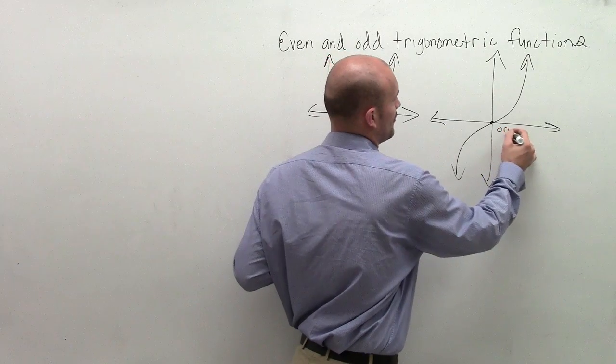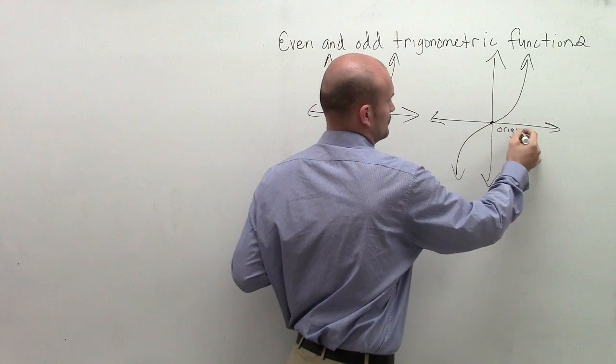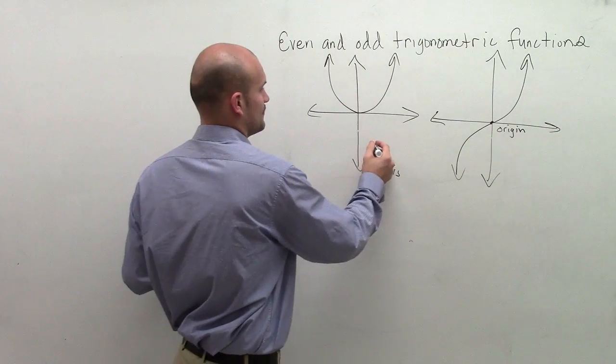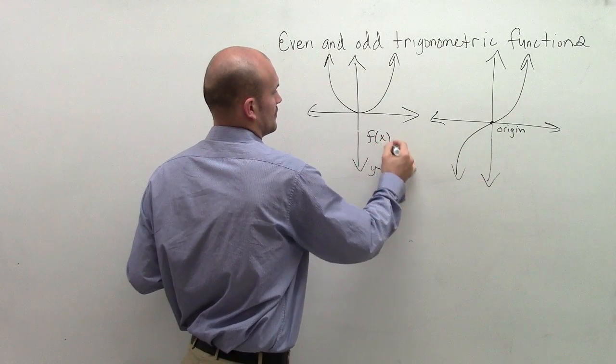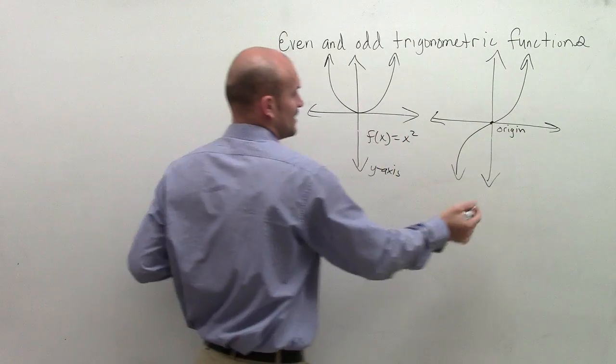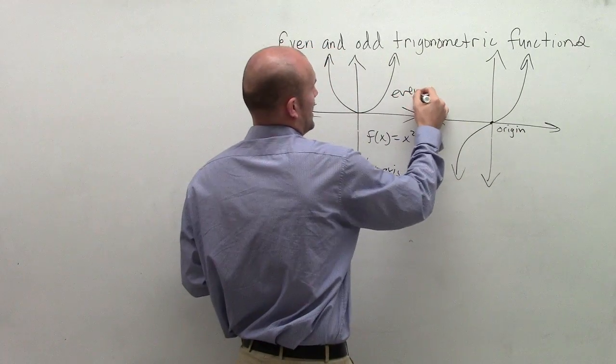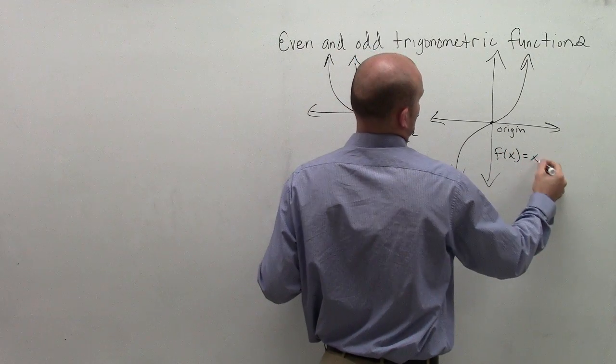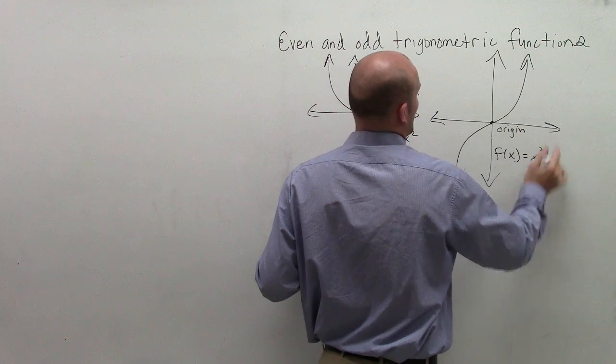So what you'll notice for both of these graphs, x squared is even and f of x equals x cubed is odd.